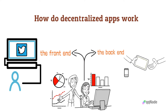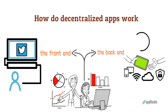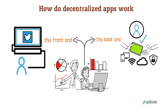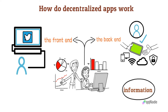The back end, on the other hand, refers to the server running the app and keeping its data. The back end stores all the information about your profile. Regular apps use a central server for their back end. All their information is stored on that central server. Taking down the app would only require taking out that central server.